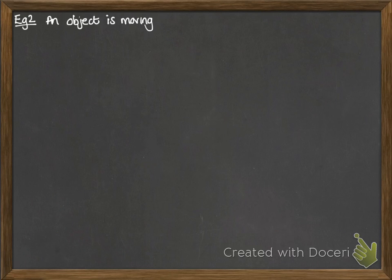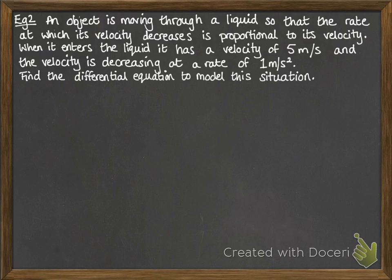Another example. We've got an object moving through a liquid, and it's moving such that the rate at which its velocity is decreasing is proportional to the velocity itself. When it enters the liquid, it has a velocity of 5 metres per second, and that velocity is decreasing at a rate of 1 metre per second squared. So find the differential equation that models this situation.